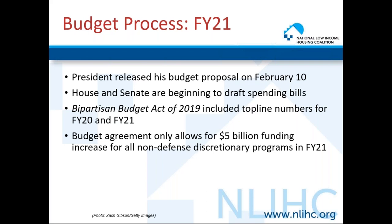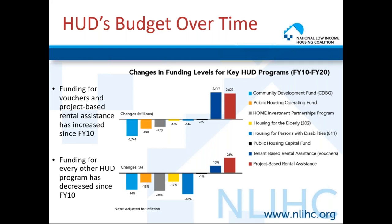While top-line numbers for fiscal year 20 included some significant increases for non-defense discretionary programs, the budget agreement only allows for a small $5 billion funding increase for all non-defense discretionary programs in fiscal year 21. Because the cost of living rises each year, it is crucial that affordable housing programs receive increased funding from year to year to continue serving the households already being served by these programs. Because it is an election year, there will likely be a CR through the election. Housing programs rely on increased funding just to maintain their programs, so it is really important to focus our advocacy efforts on the budget. NLIHC, our state partners, and our members engage Congress each year to make sure that affordable housing and transportation programs receive the highest amount of funding possible through sign-on letters and in-person meetings. Funding levels for key HUD programs have decreased since fiscal year 10. The hardest-hit HUD programs have been Section 811 (Housing for Persons with Disabilities) and the two block grant programs, the Community Development Block Grant and the Home Investments Partnership Program, otherwise known as HOME.